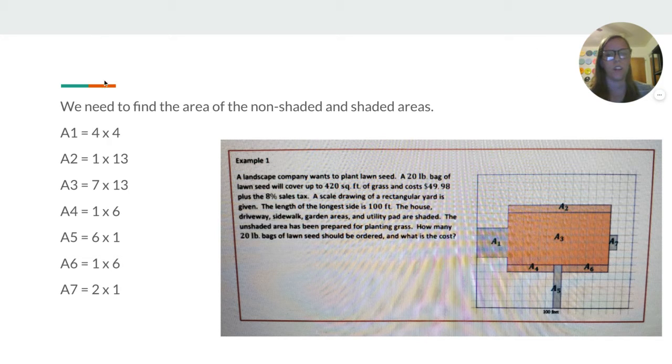Okay, so here we're finding an area. A landscape company wants to plant lawn seed. A 20 pound bag of lawn seed will cover up to 420 square feet of grass and costs $49.98, plus 8% sales tax. A scale drawing of a rectangular yard is given. The length of the longest side is 100 feet. The house, driveway, sidewalk, garden areas, and utility pad are shaded. So, all this here. The unshaded area has been prepared for planting grass. How many 20 pound bags of lawn seed should be ordered and what is the cost?